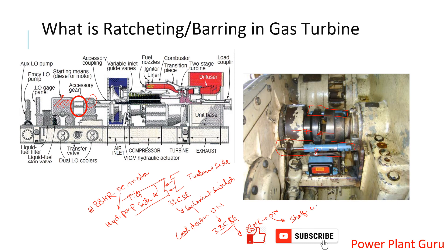The shaft is thus driven for 45 degrees — this process is called ratcheting. I hope you have understood why ratcheting is done and how it is done.